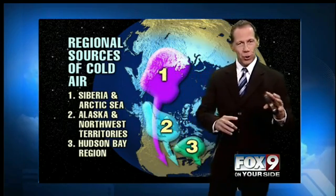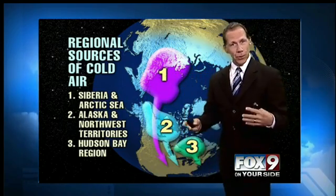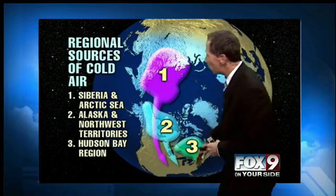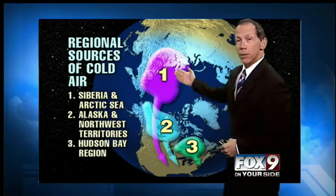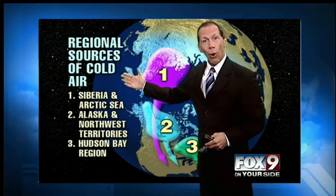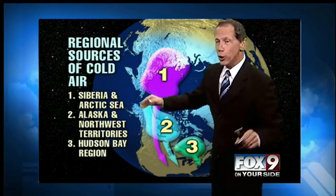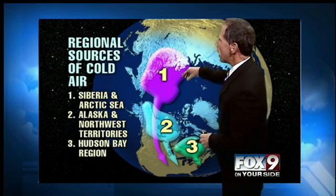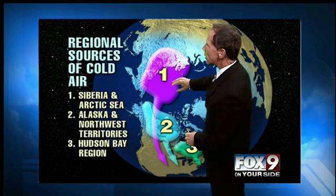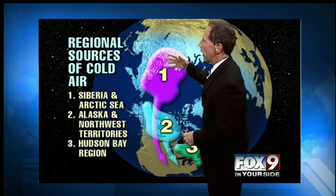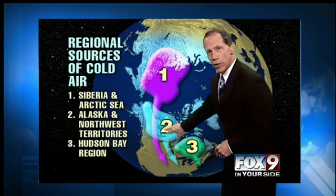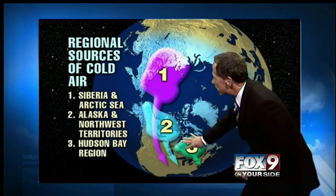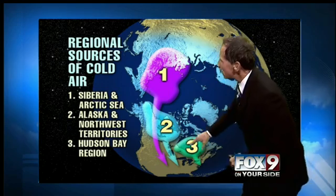Well, the key is getting air masses to move around. That's what's happening around the globe. Here's the United States on this map. Some sources of cold air that are watching now — right up here is Siberia, the Arctic Sea, Alaska, also in the Northwest Territories here, Hudson's Bay in the Northeast.